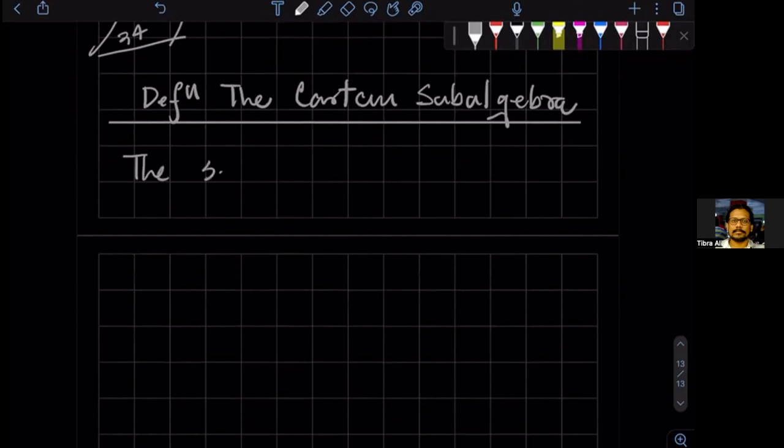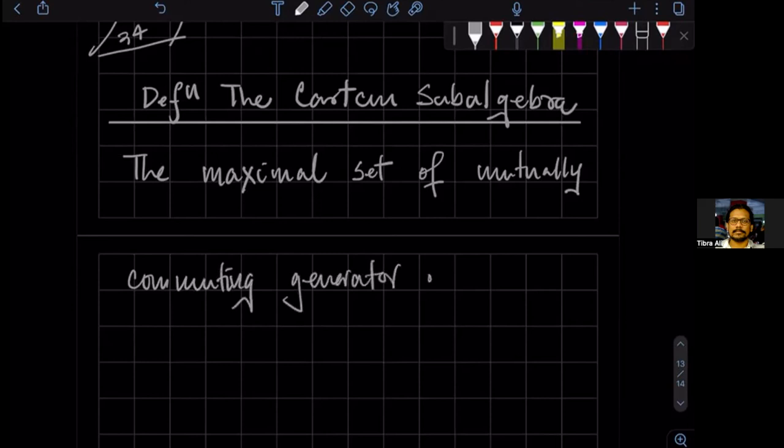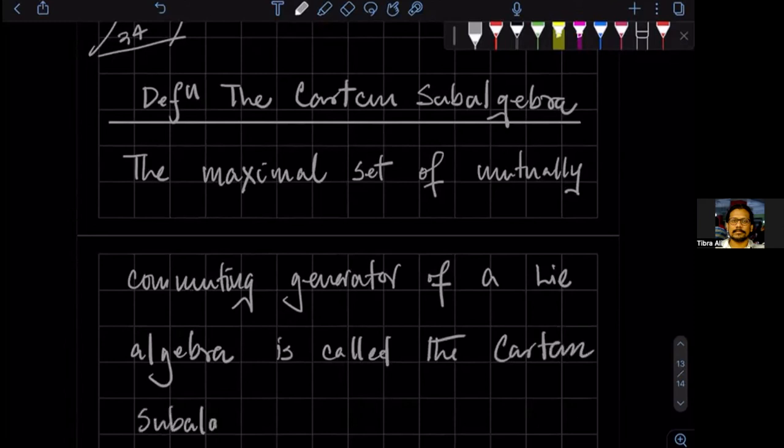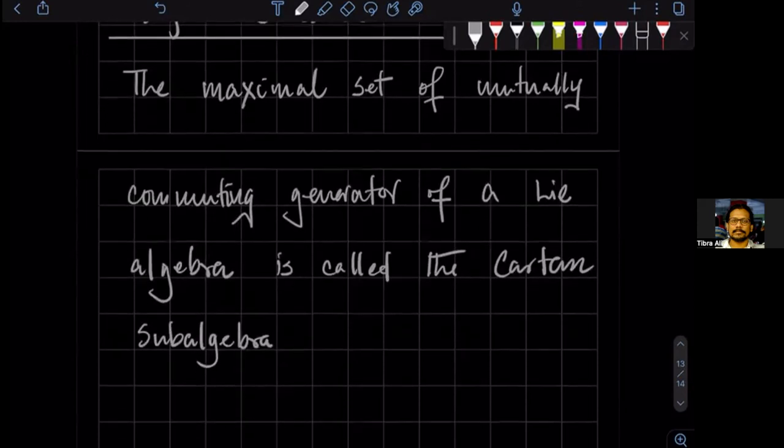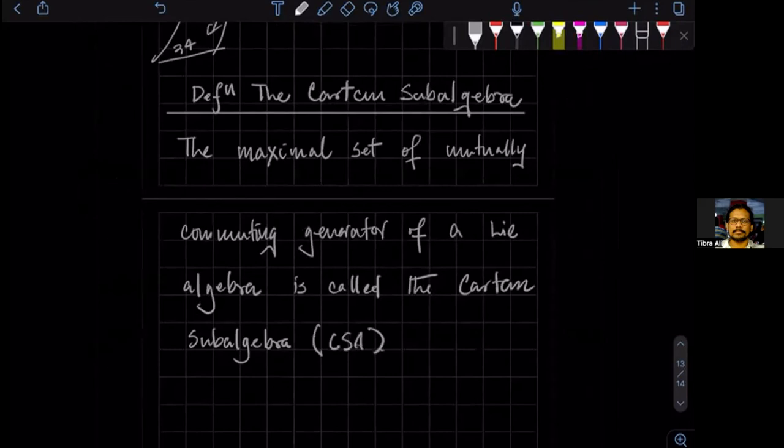And this leads us to the definition of a Cartan subalgebra. So what is a Cartan subalgebra? It is the maximal set of mutually commuting generators of a Lie algebra is called the Cartan subalgebra, or in short, CSA.